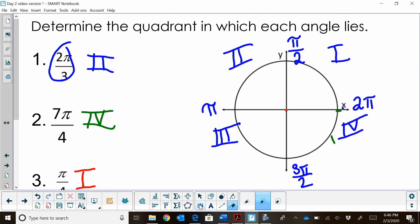So a negative angle means I'm going to rotate in the opposite direction. So anytime I have a positive angle, I'm going to rotate counterclockwise. Anytime I have a negative angle, I'm going to rotate clockwise.